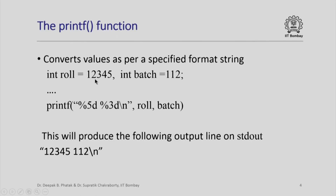Here is the printf function example. Consider we have a declaration int role equal to 12345 and int batch equal to 112. These numbers are stored in variables role and batch in the appropriate internal integer format. If I say printf("%5d %3d\n", role, batch), observe that the first parameter in the printf function is a string — this is called the format string. The other two are names of variables whose values are to be converted into formatted output.